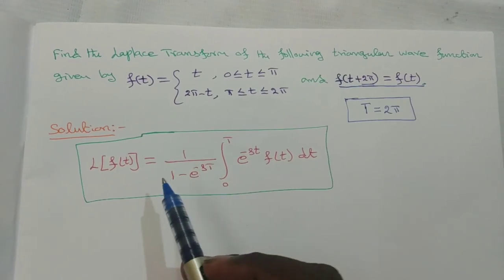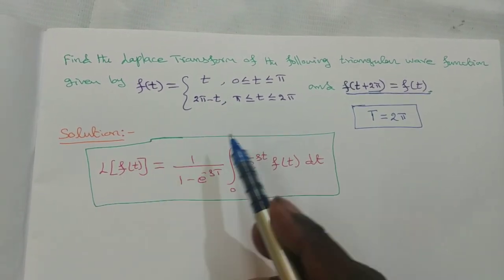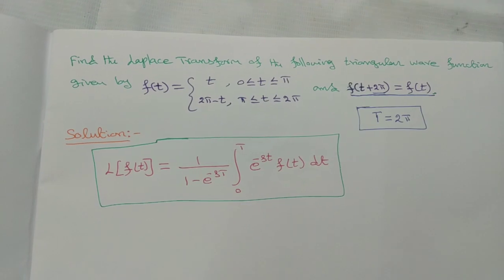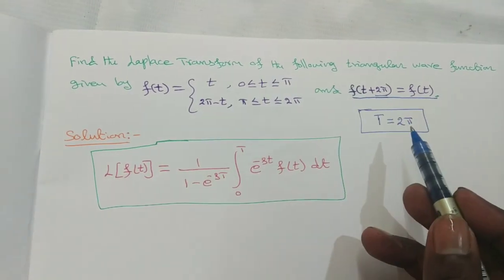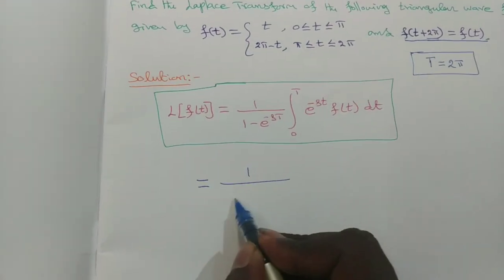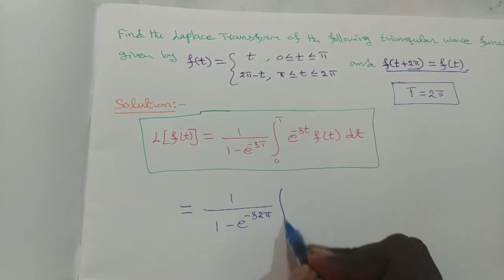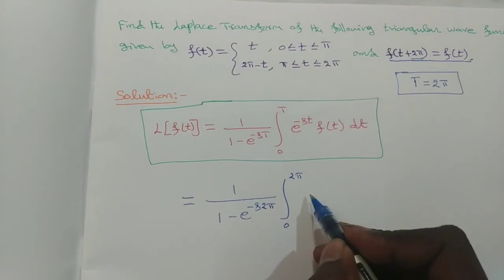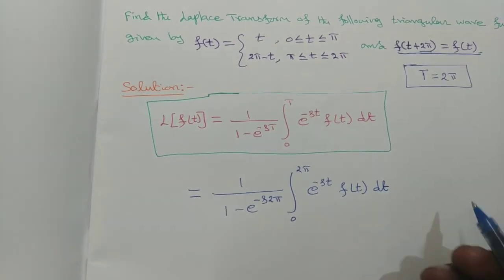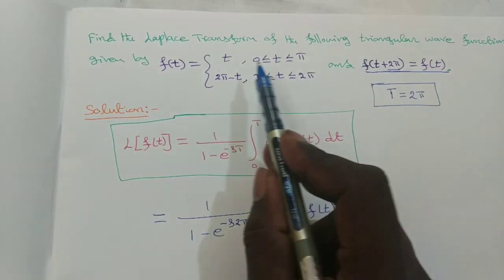Since the function is periodic, we use the formula for the Laplace transform of a periodic function. Here the period T is 2π, so we substitute: L{f(t)} = 1/(1 − e^(−sT)) × integral from 0 to 2π of e^(−st) f(t) dt. In the interval 0 to π, f(t) = t.